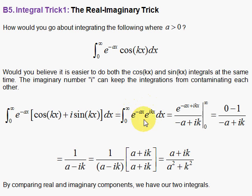And now we have a friendly integral because exponentials are friendly. We have e to the minus ax plus i kx.